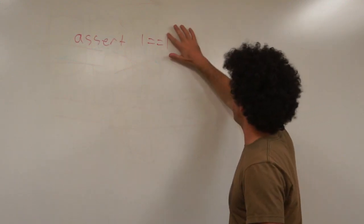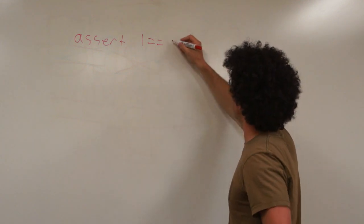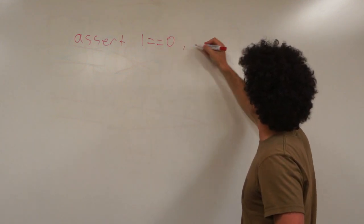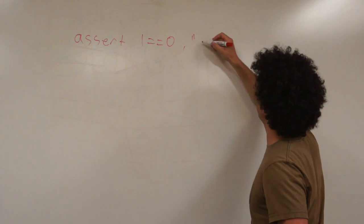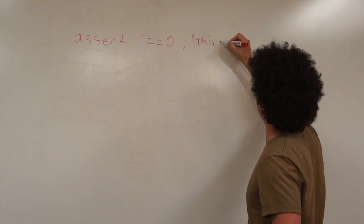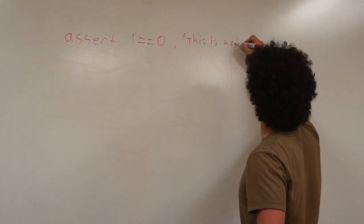For example, if I had instead of 1 equals 1, 1 equals 0, I could write something like 'this is not true'.